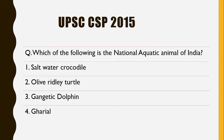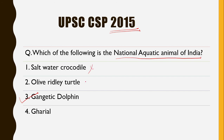Another question: UPSC Civil Services Preliminary Examination 2015. Which of the following is the National Aquatic Animal of India? As covered, the National Aquatic Animal of India is the Gangetic Dolphin — not the Saltwater Crocodile, not the Olive Ridley Turtle, not the Gharial.